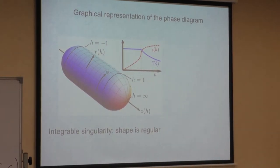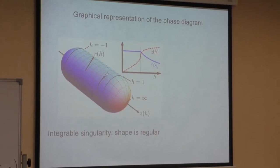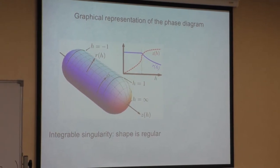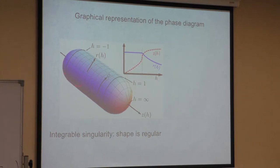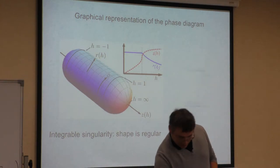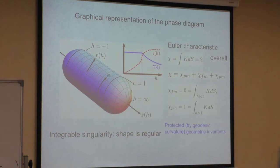This is how the transverse-field Ising phase diagram looks geometrically. The surface consists of three parts: a cylinder—which is the ferromagnet—and two hemispheres which are the paramagnet. One can ask how stable this is. Obviously the details are not stable, but here comes the Euler characteristic. If you look into this shape, you immediately see that the total Euler characteristic is trivially two.